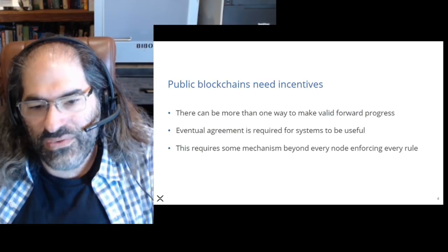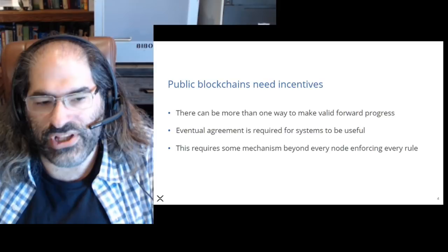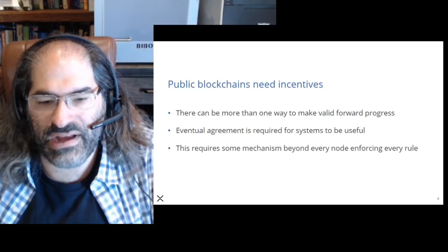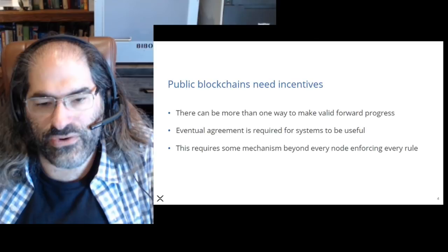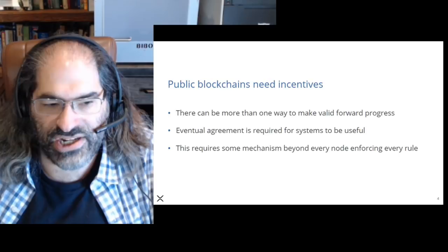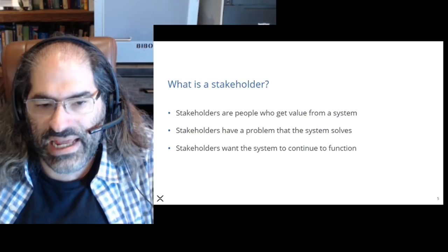We only need incentives when there's more than one way to make valid forward progress that's equally good, and we need some eventual agreement. If half the world thought the Bitcoin went to Bob and half thought it went to Alice, and both Bob and Alice shipped goods in exchange, they'd be upset when unable to send that Bitcoin elsewhere.